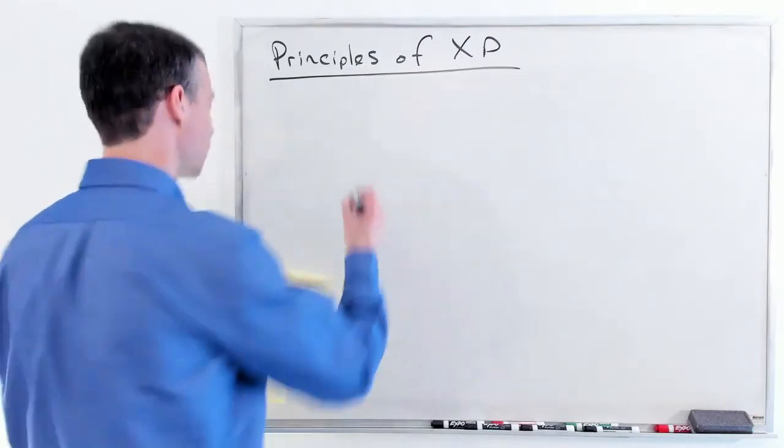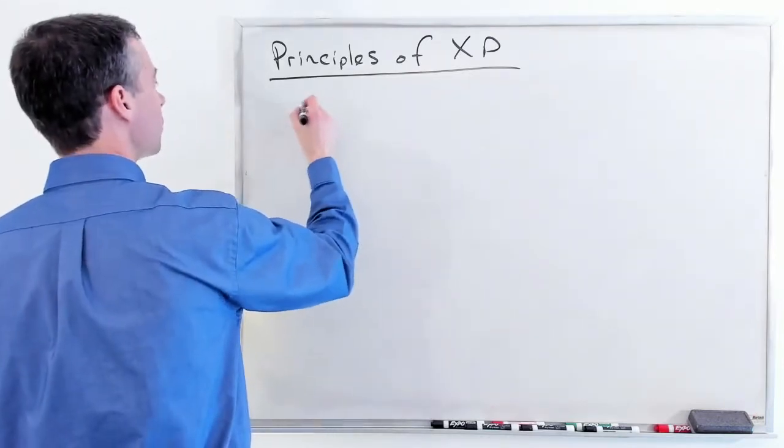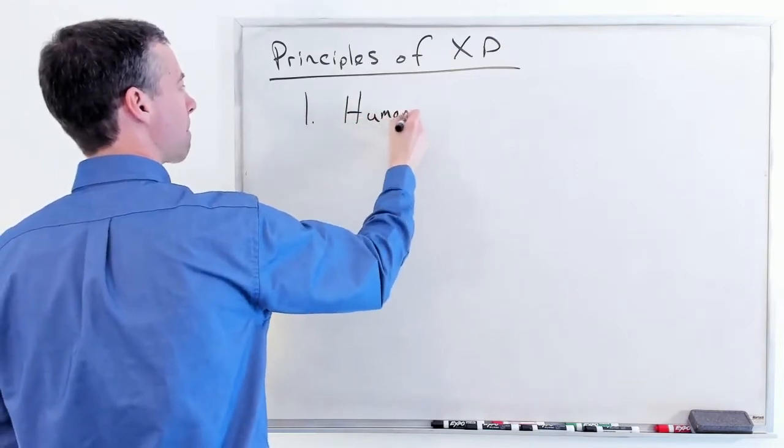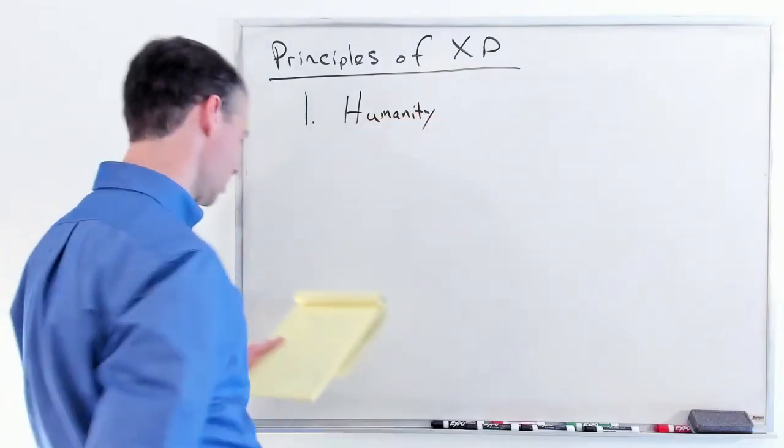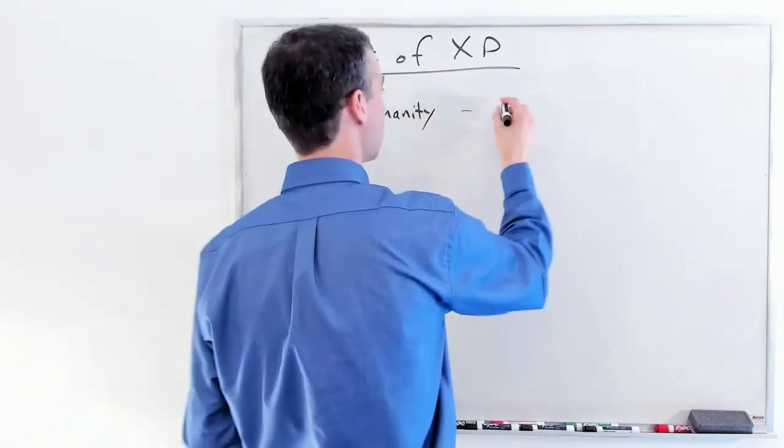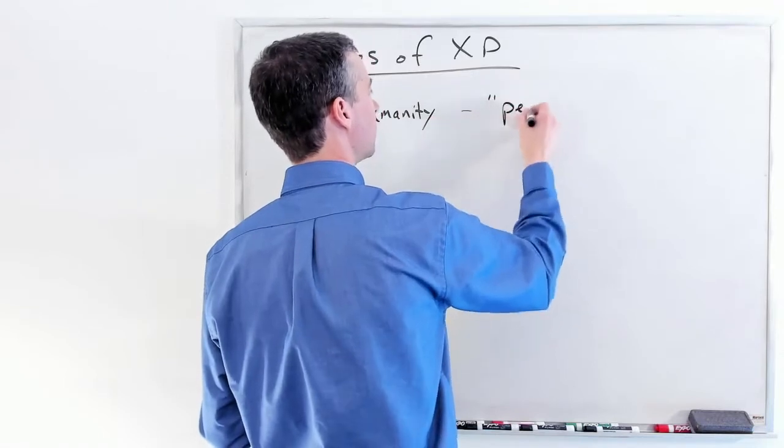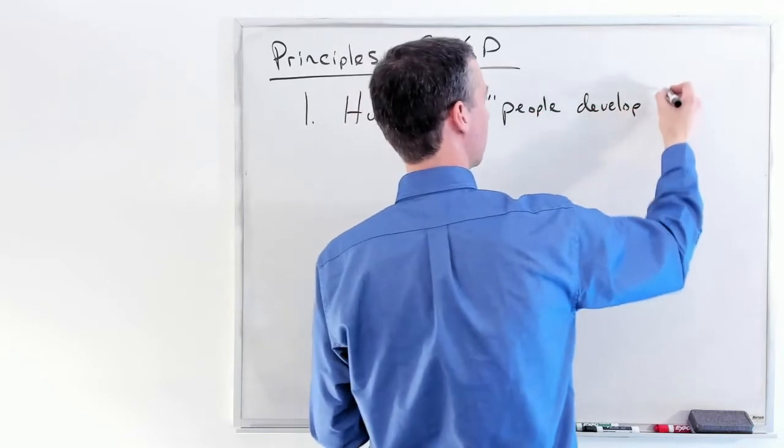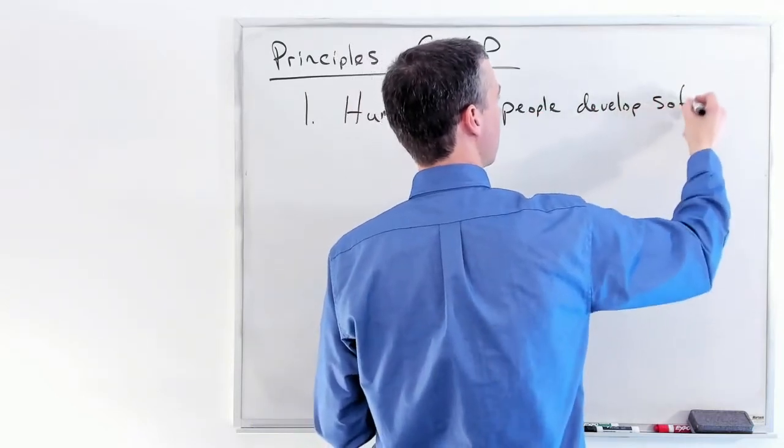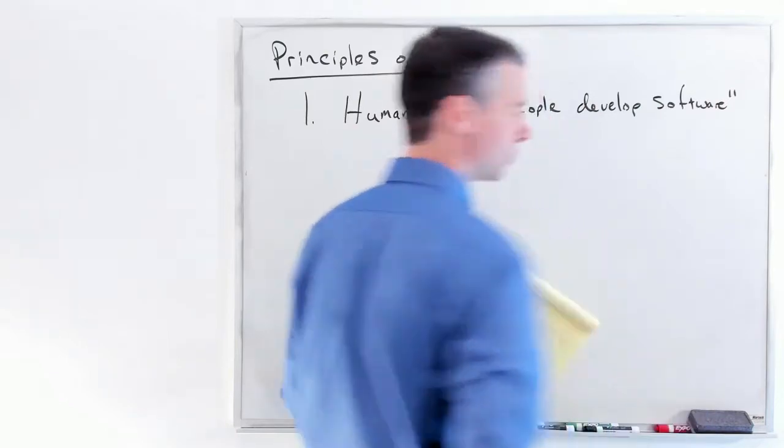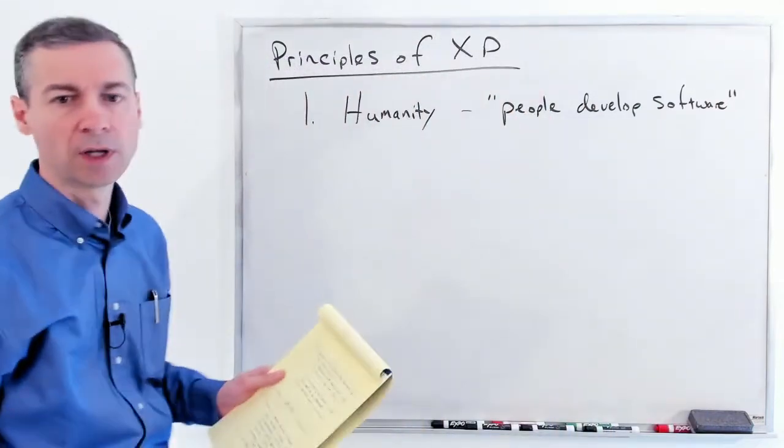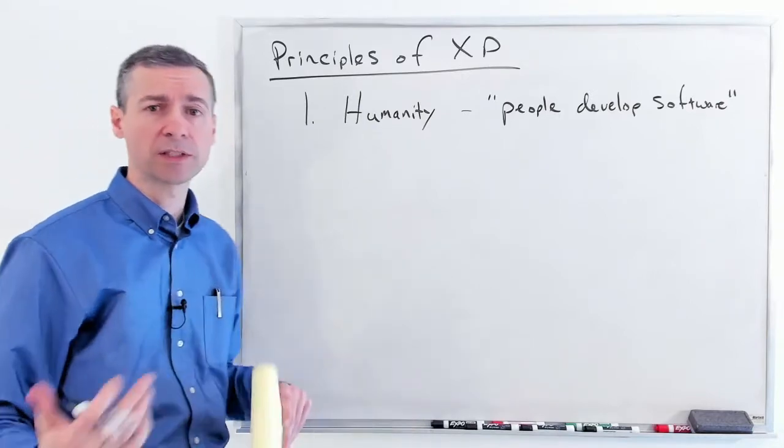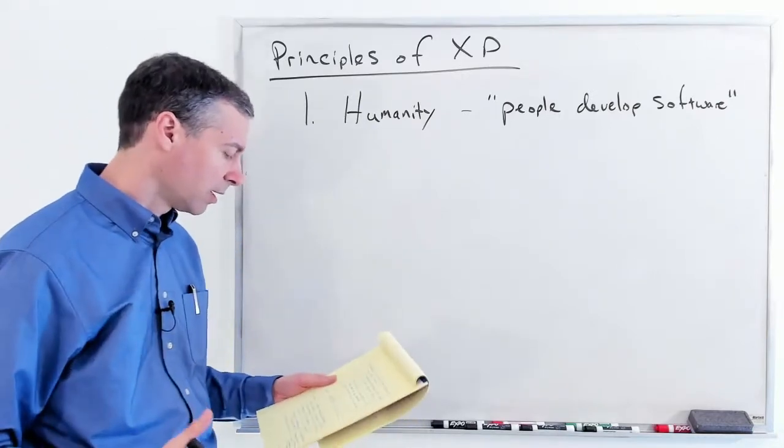The first one, most importantly, is humanity. Beck's point here is that people develop software, and at the core of XP is really dealing with coming up with systems and a way of working together as a team of people to produce the software.